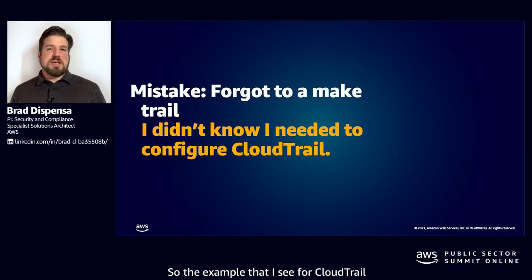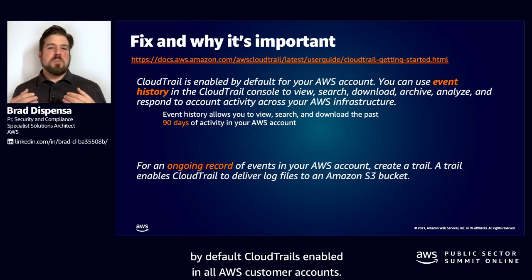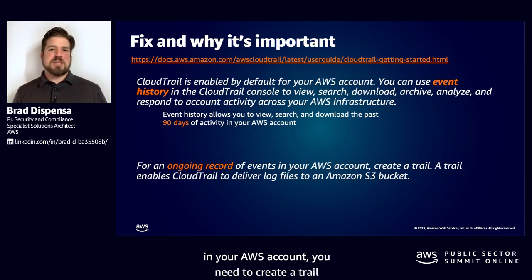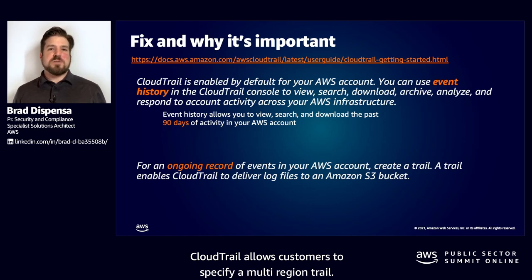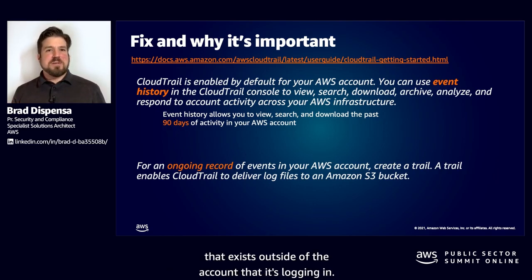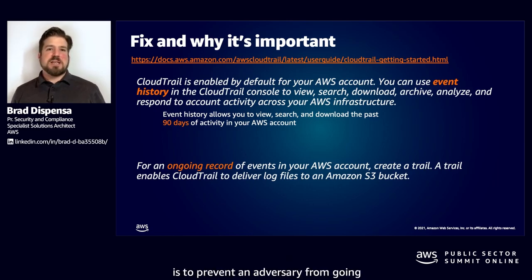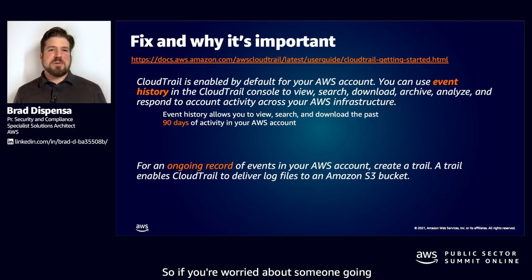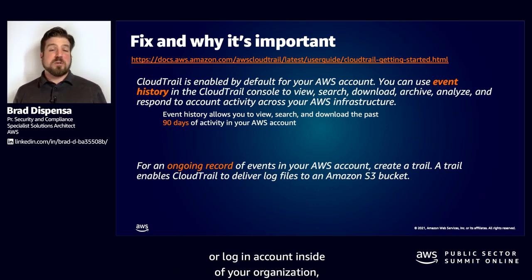What about CloudTrail? The mistake I see is customers forgot to make a trail — they didn't know they needed to configure CloudTrail. By default, CloudTrail is enabled in all AWS customer accounts and records activity for 90 days. But if you want an ongoing record of events in your AWS account, you need to create a trail and enable it to deliver log files to an Amazon S3 bucket. CloudTrail allows customers to specify a multi-region trail so everything aggregates to a single bucket. Customers can also specify a bucket that exists outside of the account it's logging in, to prevent an adversary from performing delete operations on those log files.